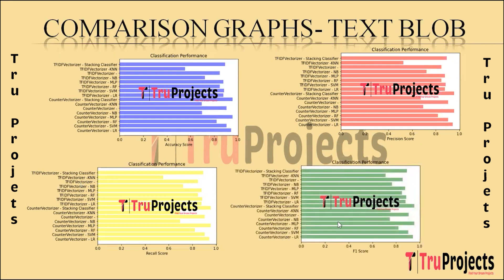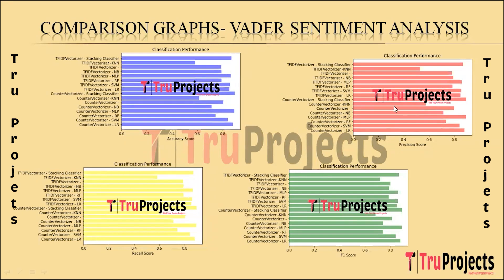This is the F1 scores comparison graph, with F1 scores on the X-axis and algorithm names on the Y-axis. The F1 score combines precision and recall into a single metric, balancing accuracy and completeness in predictions. These are also the performance metrics comparison graphs of the algorithms built using the VADER sentiment analysis technique. The algorithm which is best performing across all performance metrics will be used for predictions.